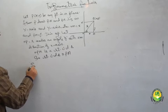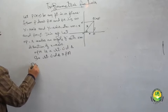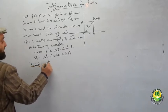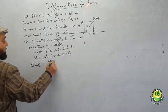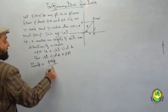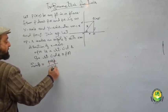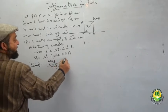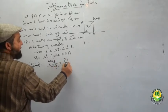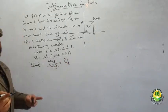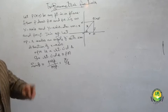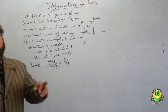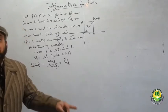In right-angled triangle OPM, sine theta is equal to perpendicular divided by hypotenuse, that is y by r. The ratio of perpendicular to hypotenuse is known as sine theta.